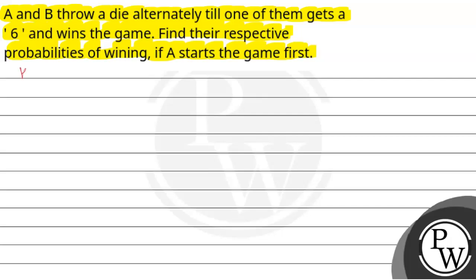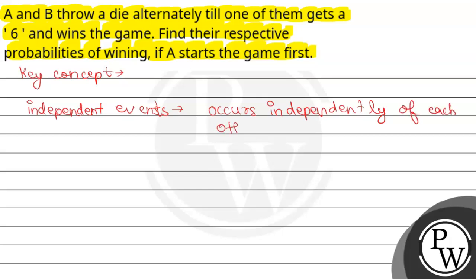Now here our key concept is independent events, which occur independently of each other. Two events will be independent when one event's occurrence will not affect the other.